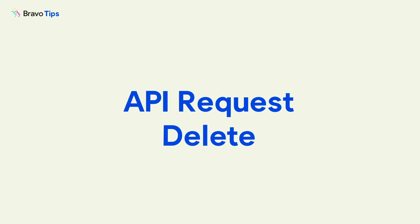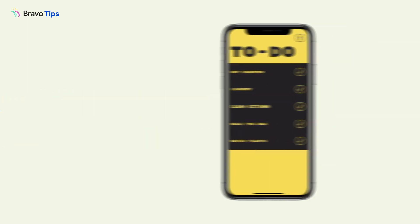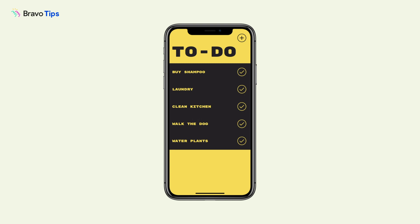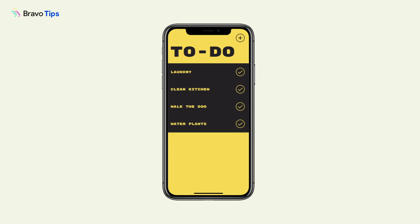Here's how to delete the content of a data source from your app. Let's say you have a to-do list. Once you finish a task, you want to delete it from the list.